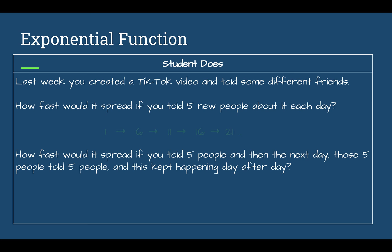Let's check. The first one: you are telling five people each day, so your total goes from 1 to 6 to 11 to 16 to 21 and so on — that's linear. Compared to if you tell five people and they each tell five people — you are multiplying by five each time — that's exponential.